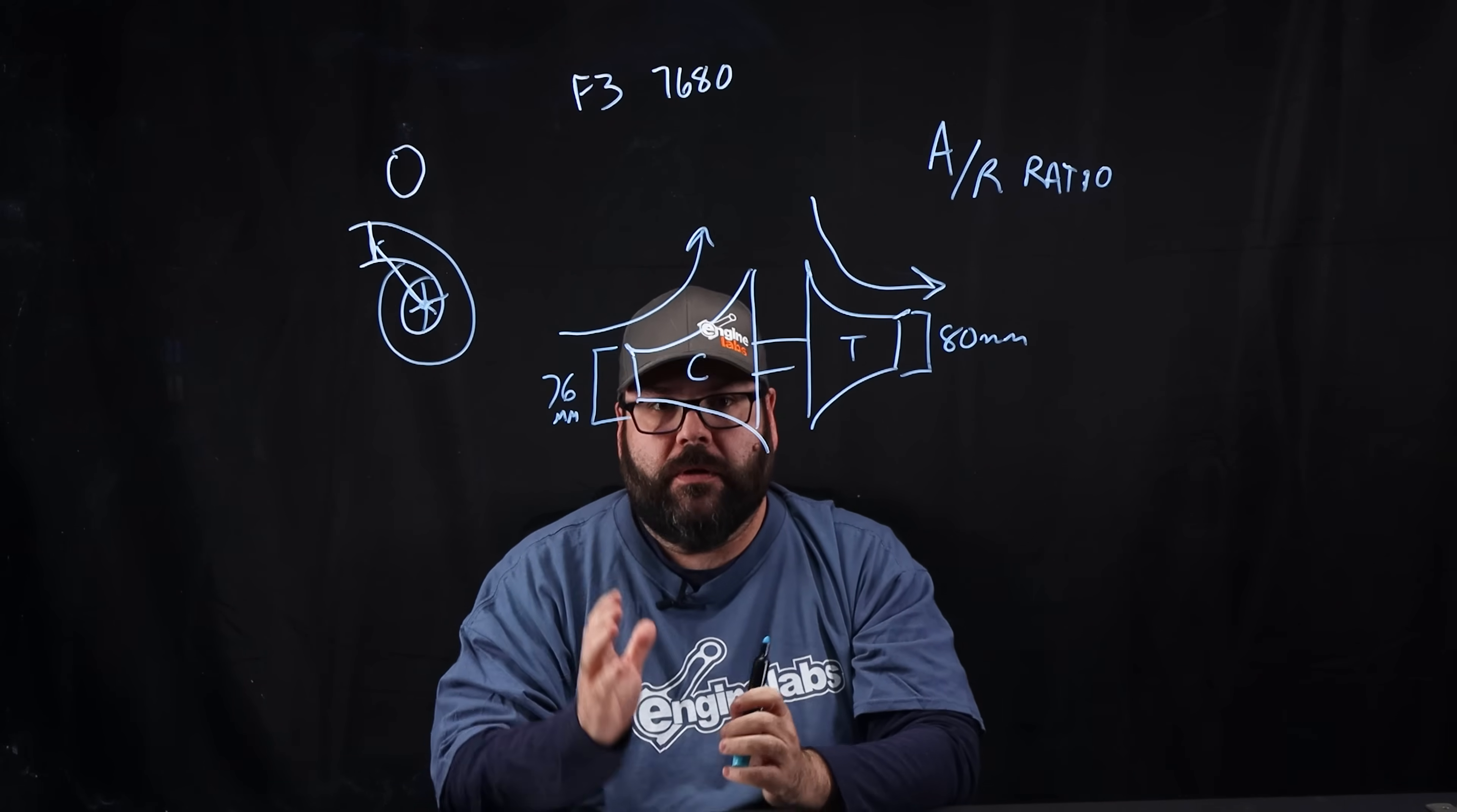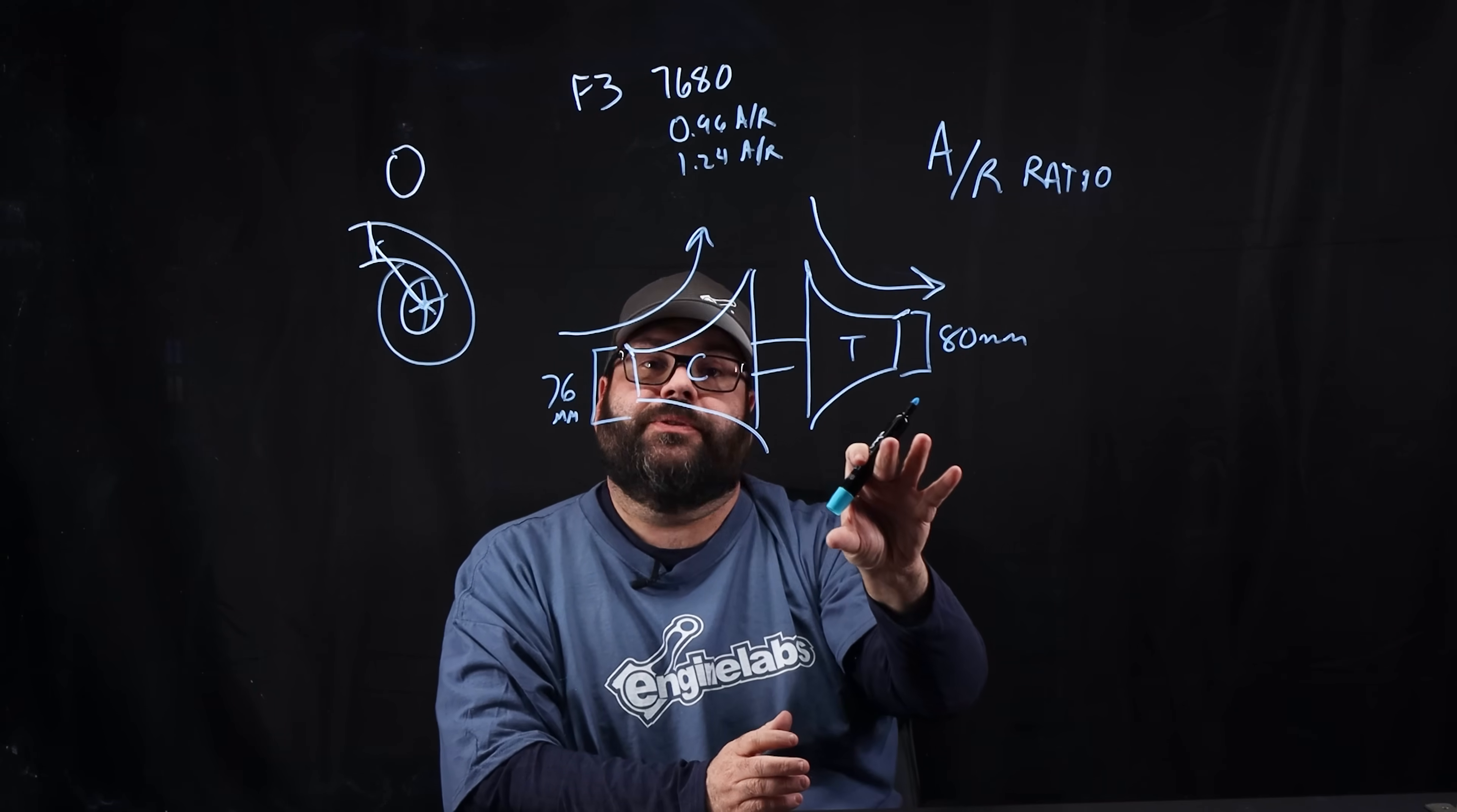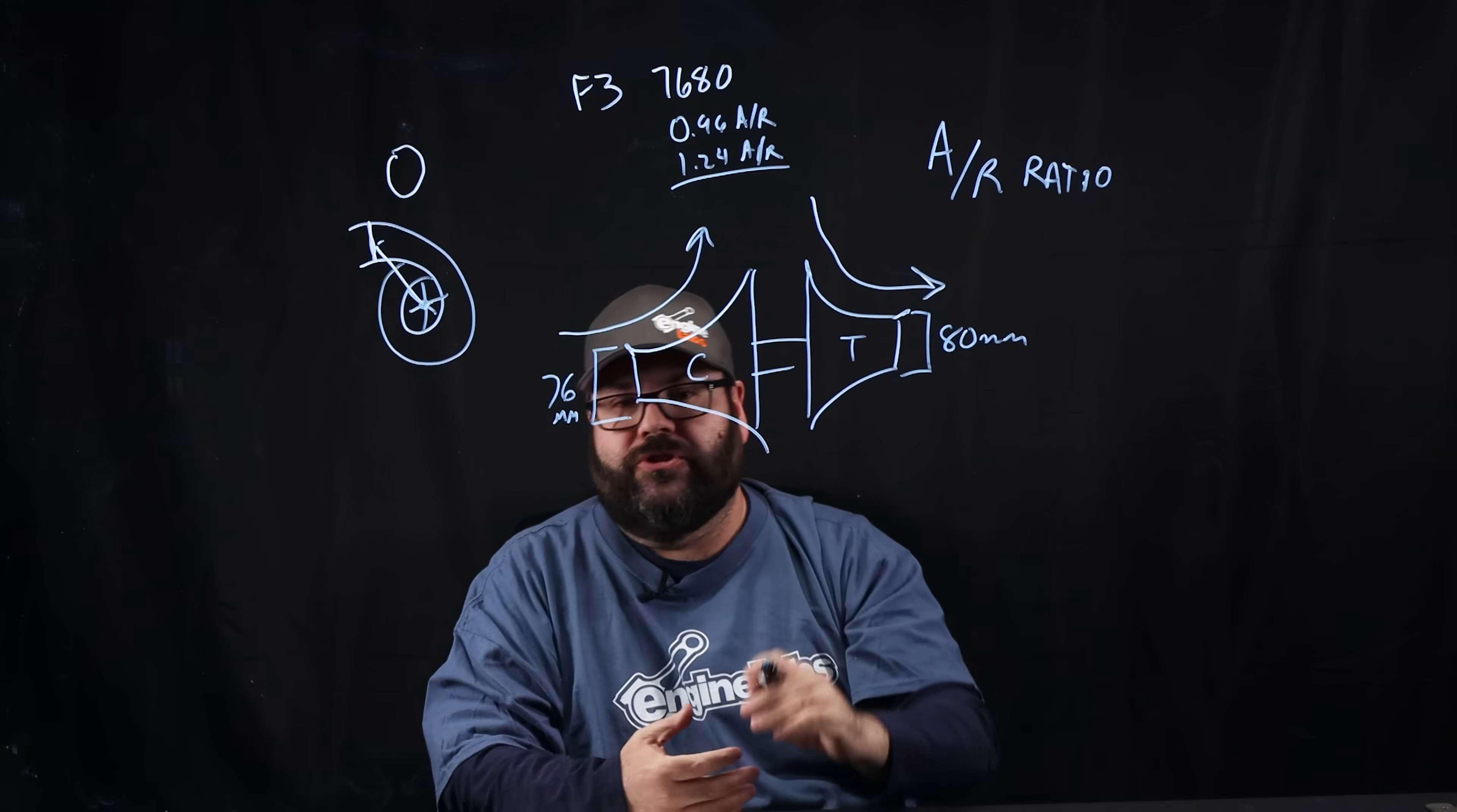That just comes up with a number to tell us how big the relative size of the exhaust housing is. For example, in the 7680, the options were 0.96 AR or 1.24 AR. So what that means, the 0.96 AR will spool up faster because it has a smaller exhaust housing, but it will reach its max efficiency a lot sooner, so it'll choke sooner. The 1.24, which is what we used, has a much larger exhaust housing. So it may take longer to spool up before it maxes out the capabilities of that housing. Now, we didn't have any problem choking the turbo because we were making so much exhaust. So even though we had the larger one, it was still too small.